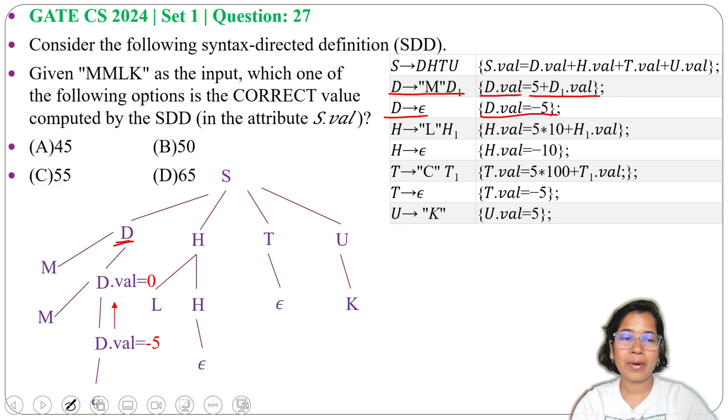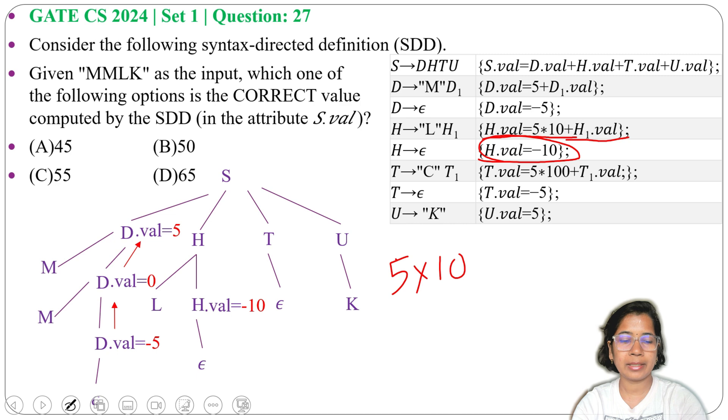Next, H derives epsilon, so H.val = -10. Then H derives L, H. So H.val = 5 × 10 + H.val. So 5 × 10 = 50, and H.val is -10, so 50 - 10 = 40. So here H.val will be 40.